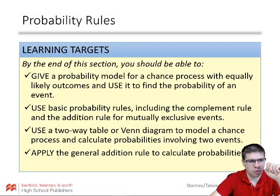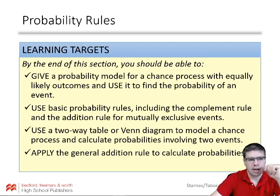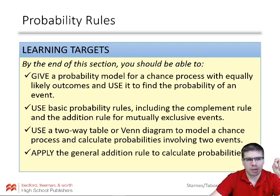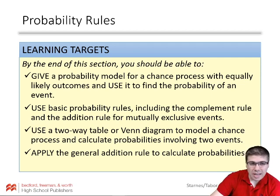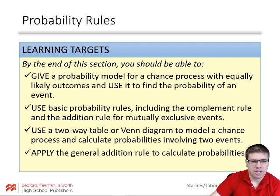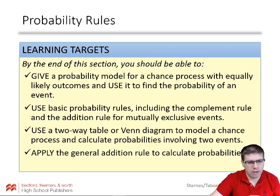By the end of this section you should be able to give a probability model for a chance process with equally likely outcomes and use it to find the probability of an event. Use basic probability rules including the complement rule and the addition rule for mutually exclusive events, and use a two-way table or Venn diagram to model a chance process and calculate probabilities involving two events, and apply the general addition rule to calculate probabilities.